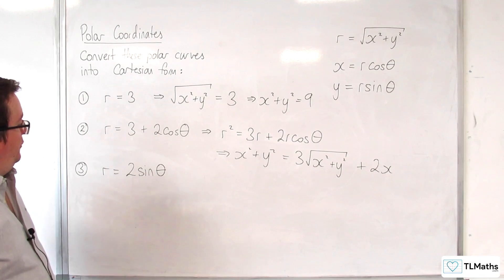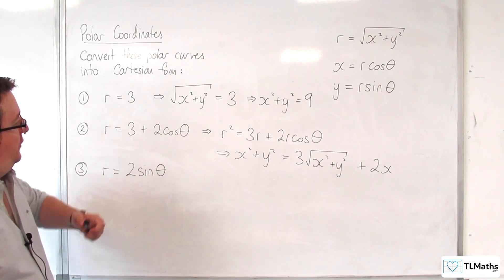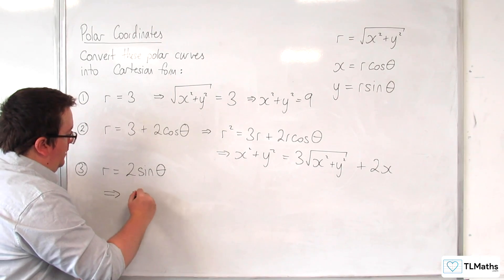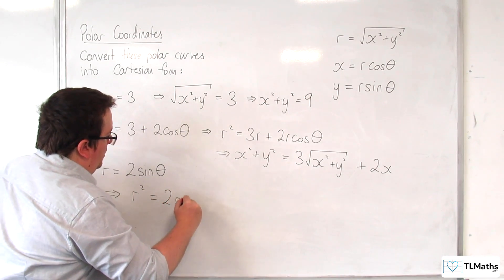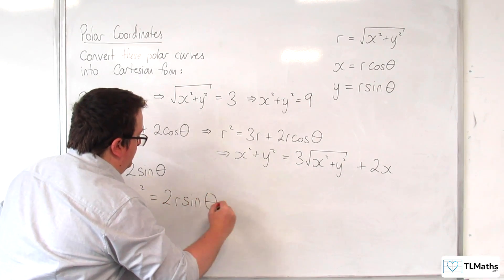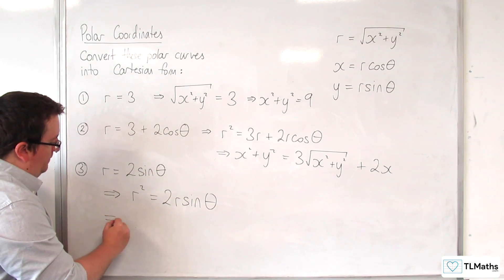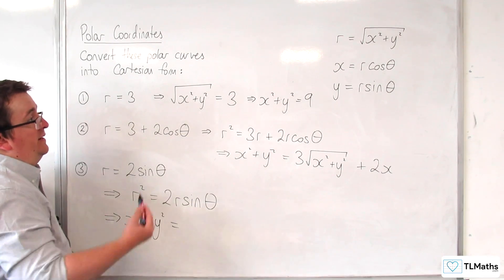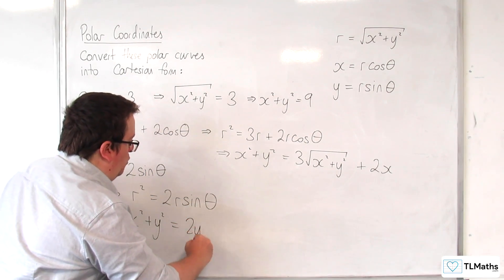And let's finally take a look at this one. R equals 2 sine theta. Well, if we use the same trick as number 2, we can multiply through by R first. So R squared is equal to 2R sine theta. The R squared is x squared plus y squared. And the R sine theta is y. So we get 2y.